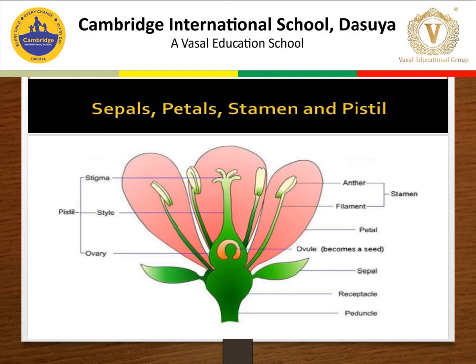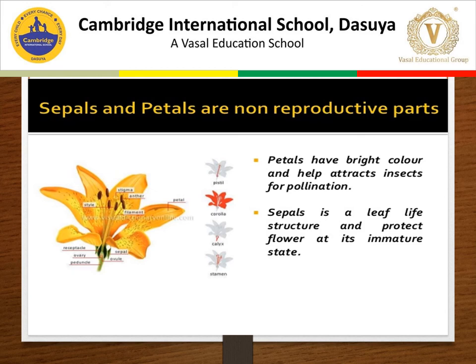Gynoecium is the female reproductive part of the flower. It is formed of one or more carpels. Carpels lie in the center of the flower in a flask-shaped structure. A carpel is made up of three parts: stigma, style, and ovary. Stigma is the upper part of the carpel — it receives pollen grains and male gametes during pollination. Style is the long part of the carpel which connects the stigma with the ovary. The ovary is the basal part of the carpel. The ovary bears ovules. The female gamete called ovum is produced in the ovule. The ovule may be unilocular when there is only one chamber, or multilocular when there are many chambers.